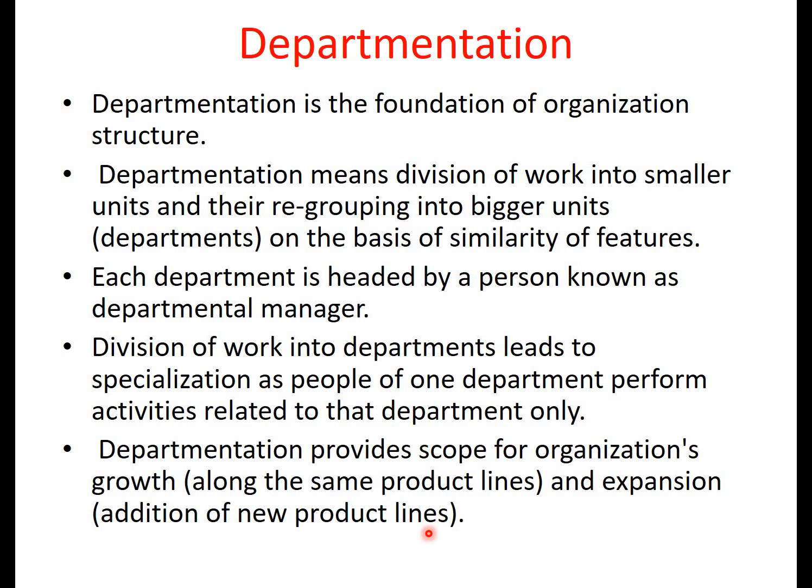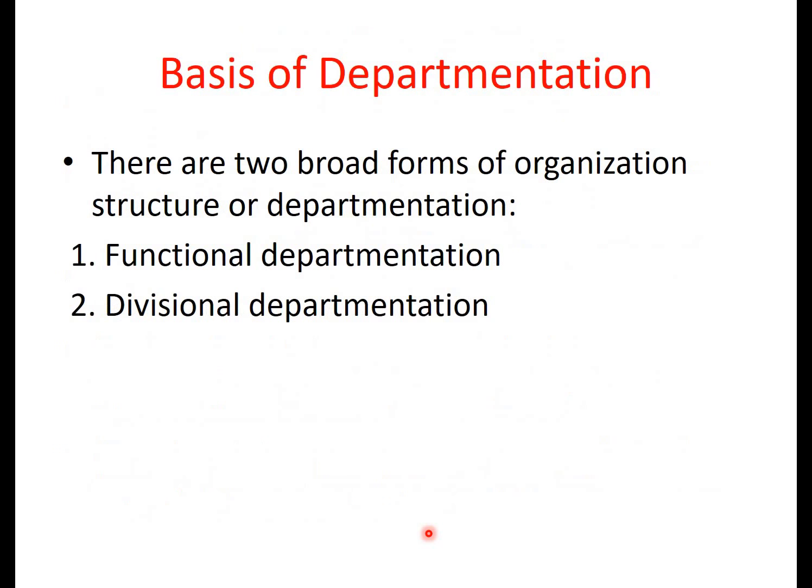Departmentation provides scope for organizational growth along the same product line and for expansion by addition of new product lines. Through departmentation, we can focus on the growth of the organization — either by introducing a new product line or by adding a new department. There are two broad forms of organizational structure or departmentation: functional departmentation, where activities are grouped on the basis of function, and divisional departmentation, where activities are grouped on the basis of divisions.